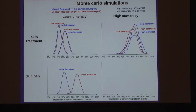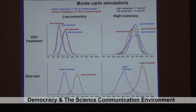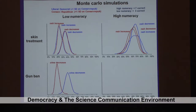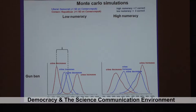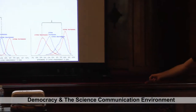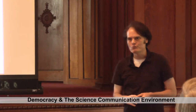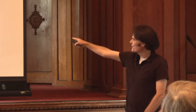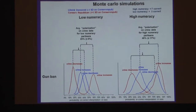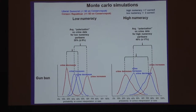Now with the gun ban, you start to see the polarization. In the crime-increases condition, conservatives are a little more likely to get it right — that's what conservatives expect. In the crime-decreases condition for both low and high numeracy, the gap between the likelihood of subjects getting it right is bigger for the high-numeracy people. A low-numeracy person is 25 percentage points more likely to get the right answer if the information corresponds to that person's political outlook. But for high-numeracy subjects, they're 46 percentage points more likely to get the right answer if the information is consistent with their ideology than if it's inconsistent.